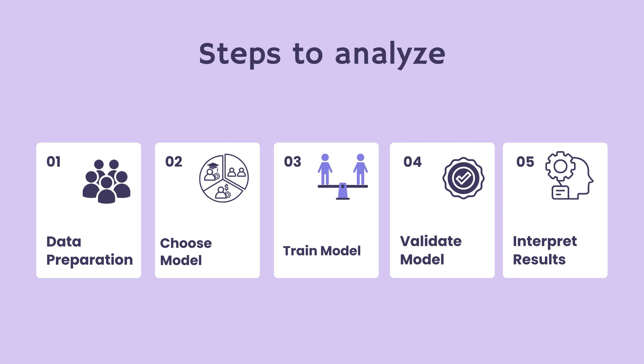Step 4: Validate Model — test your model's accuracy with a separate dataset to ensure its reliability and effectiveness in predicting future outcomes. Step 5: Interpret Results — analyze the model's predictions to derive actionable insights, guiding Future Upskill in adapting their curriculum to meet future skill demands.